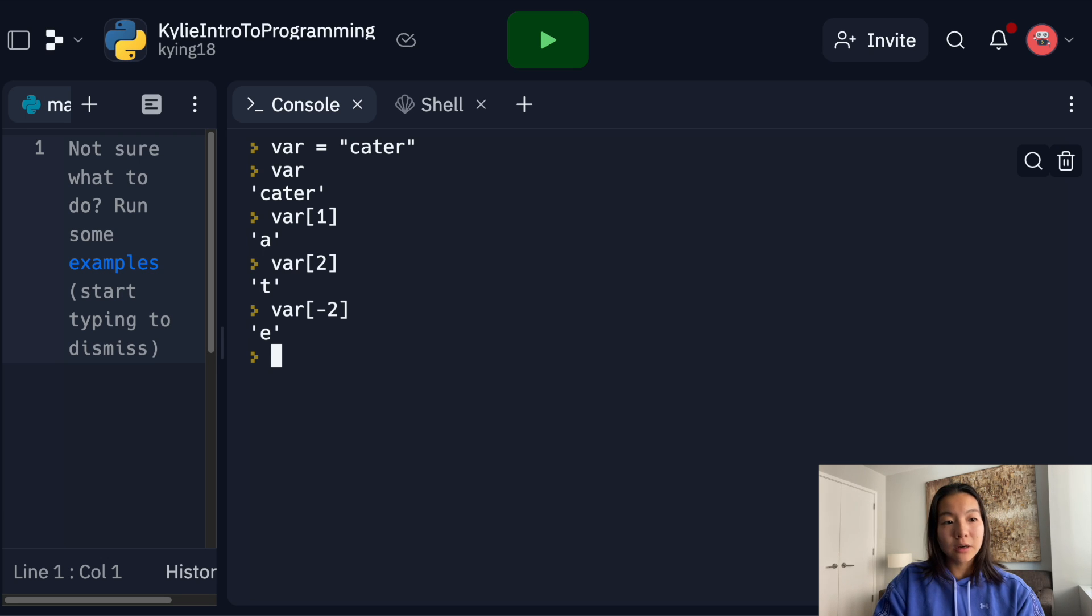Now we could also slice. So if I take var one to four, for example, then we get ATE because remember, we're going from the left hand side. So 0, 1. So we go from the left of A to the left of 0, 1, 2, 3, 4, R. So this would be everything in between, which is ATE.